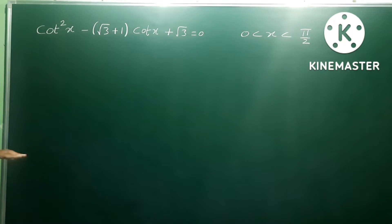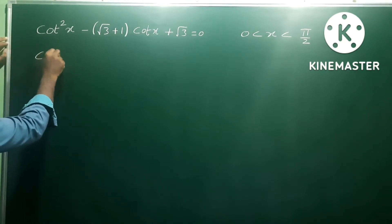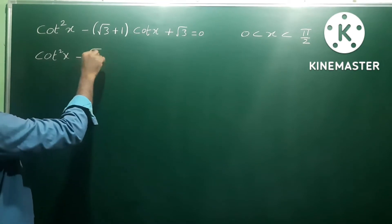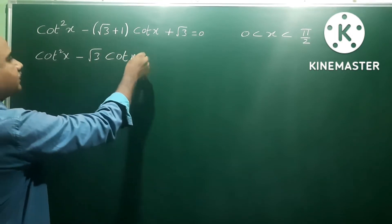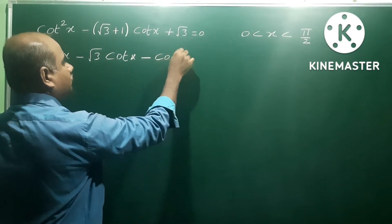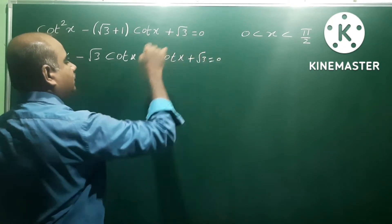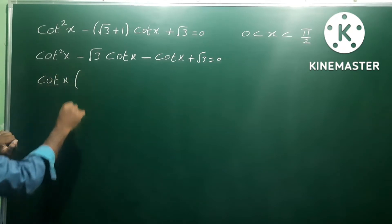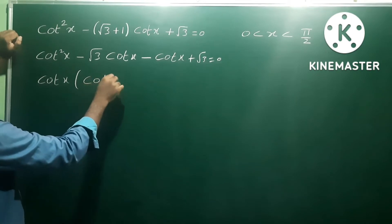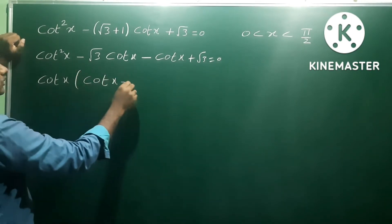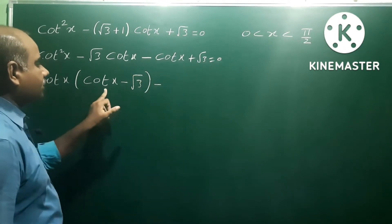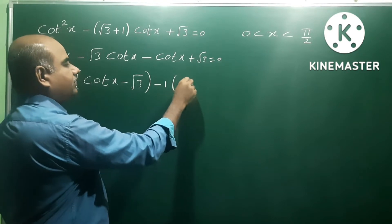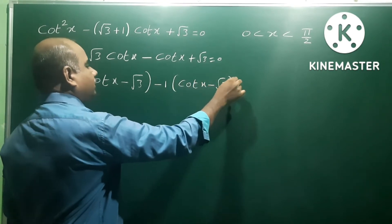So the equation has a cot square value equal to 0. Let us factor cot²x. Splitting the middle term: cot²x minus √3·cotx minus 1·cotx plus √3 is equal to 0. Take cotx as common from the first two terms — remaining is cotx minus √3. Then take minus 1 as common from the last two terms, giving cotx minus √3 equal to 0.